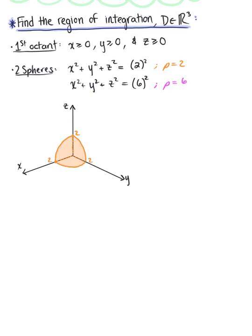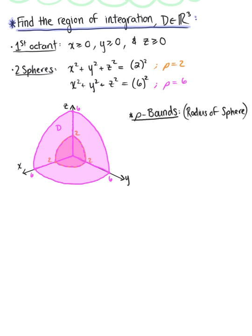Sketching the second sphere on our graph — this is not drawn to scale, but we're labeling to help visualize for accuracy — we have a radius of 6. Just from sketching this graph and looking at the two spheres, we can see the rho bounds. Rho represents the radius of the sphere: the smallest radius is 2 and the largest is 6. Therefore, 2 ≤ ρ ≤ 6.